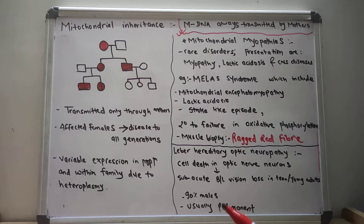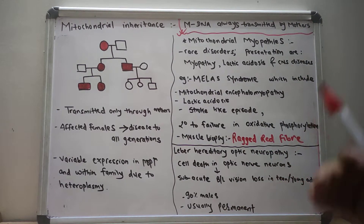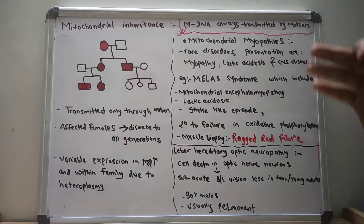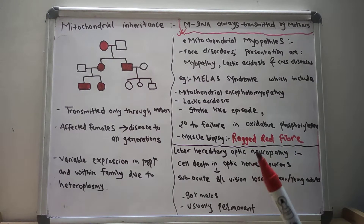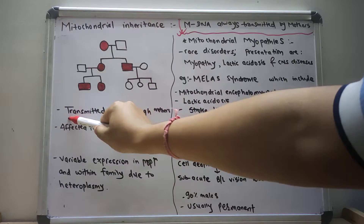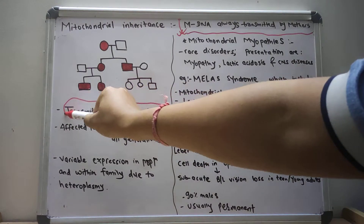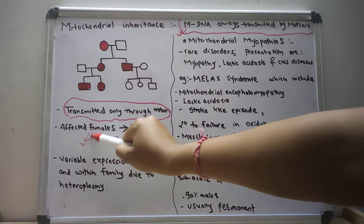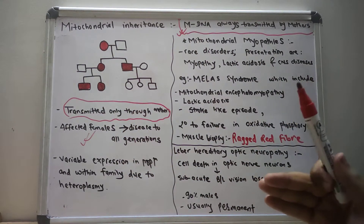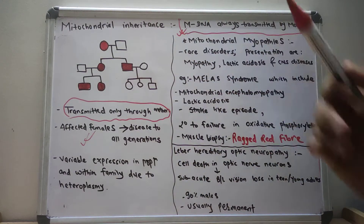Whether the mitochondrial DNA is diseased or not, it is always transmitted by the mothers, always transmitted by the females. The mitochondrial inheritance is always transmitted only through mothers, so the affected females transmit disease to all the generations, as you can see in this pedigree chart.